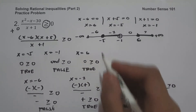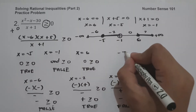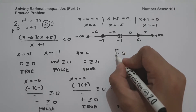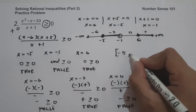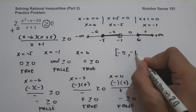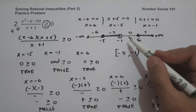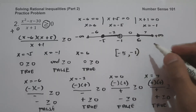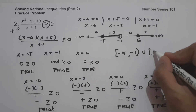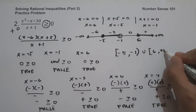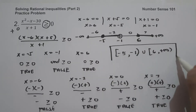To write our answer, I start with negative 5 using a bracket because of the closed circle, up to negative 1 with a parenthesis because of the open circle, union, bracket 6 comma positive infinity. And this will be our answer: [−5, −1) ∪ [6, +∞).